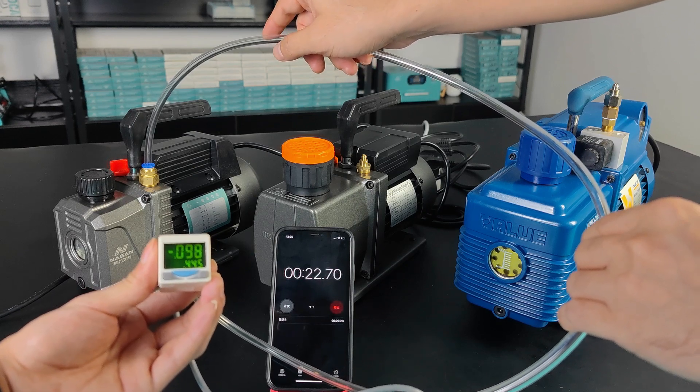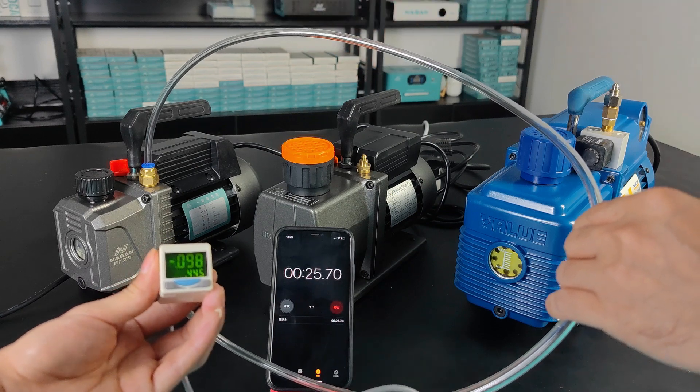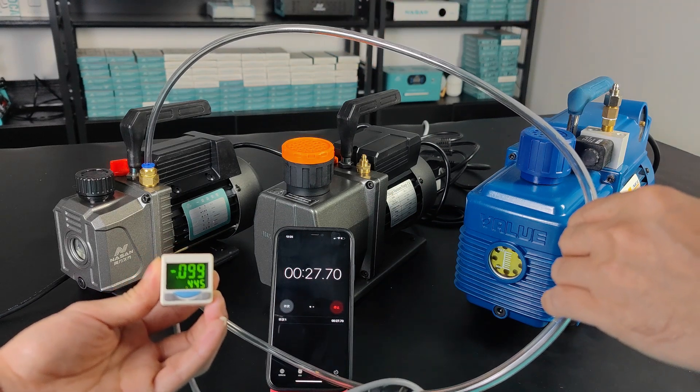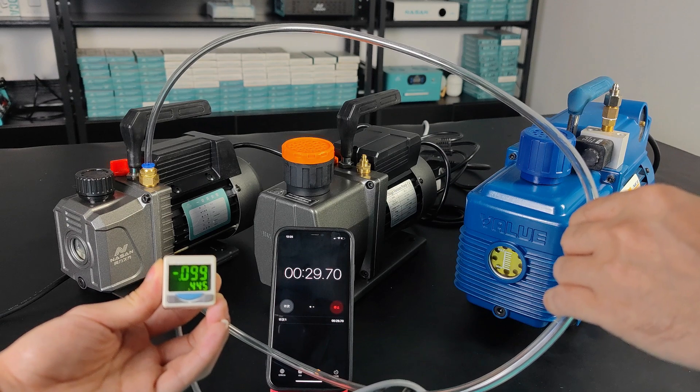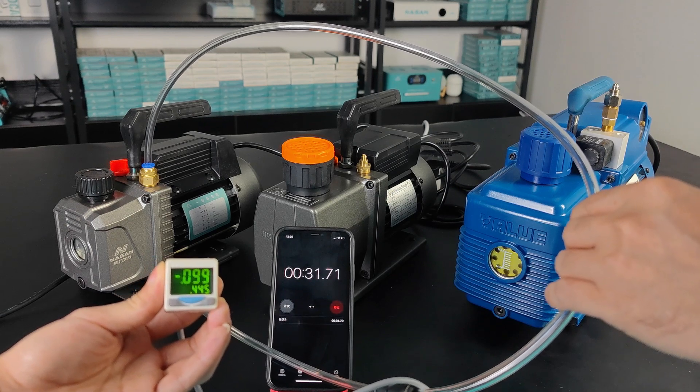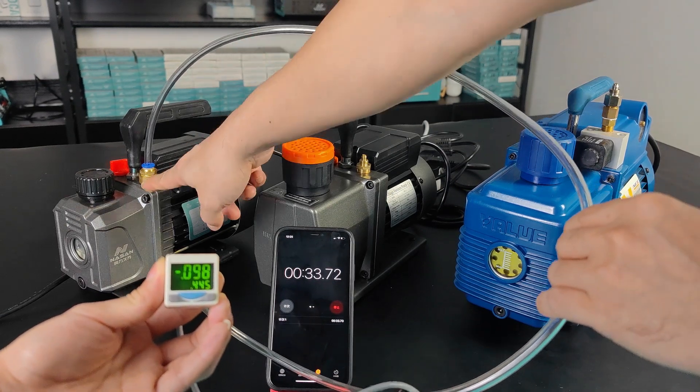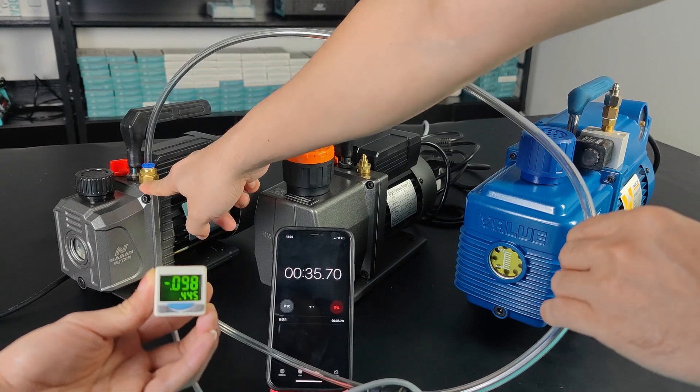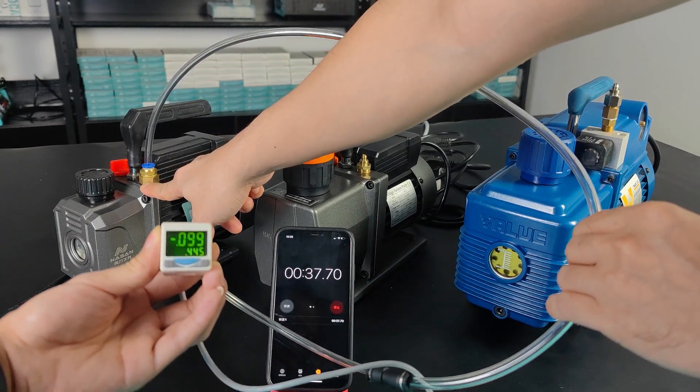We can see that the vacuum value right now is minus 98 to 99, but it will stabilize at 98. This one is one liter. That's the one we're using for the Super Light.